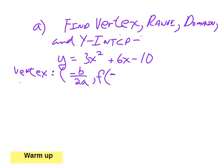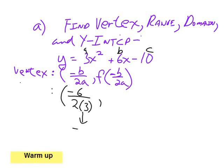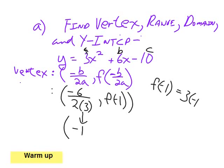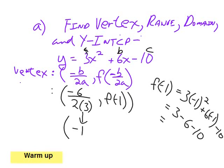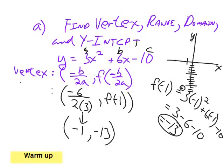Knowing how to find a vertex from the general form: take the negative of b, divide it by two times a, calculate that, then plug it back in to find the corresponding y. There's only one y for any particular x. Here's your vertex — it's at the point x of negative one, and a y of negative 13. So if you were to graph it out, you'd see it look something like this.